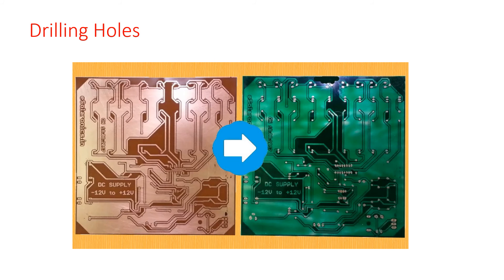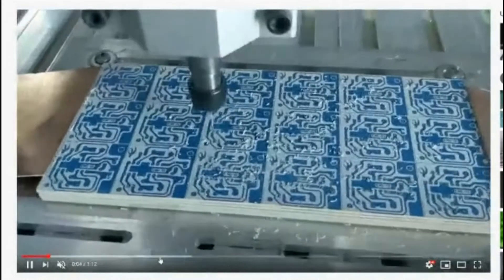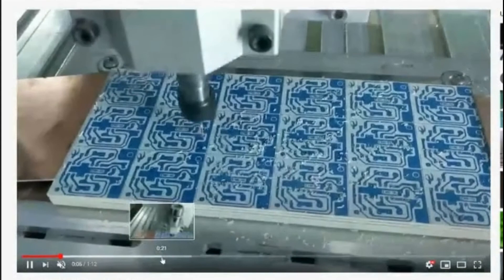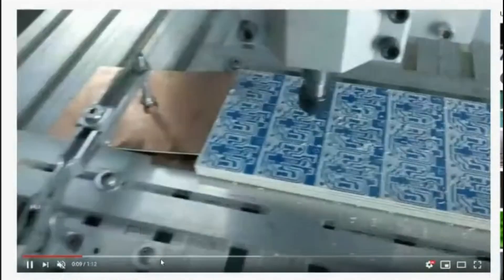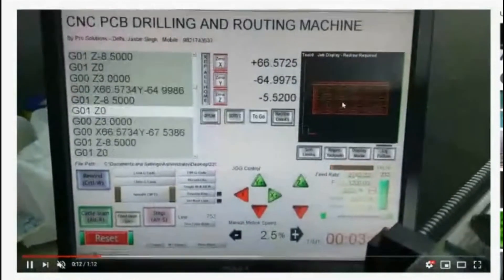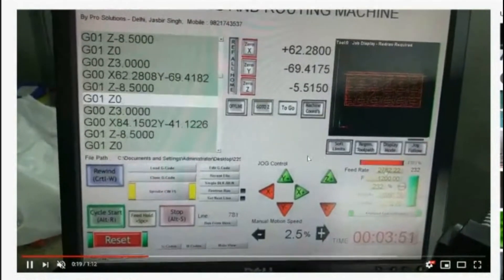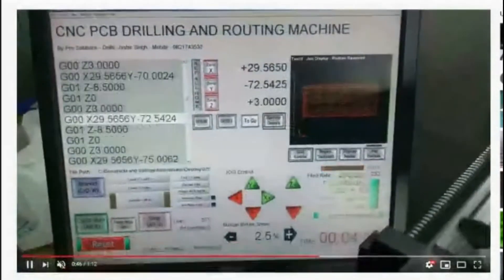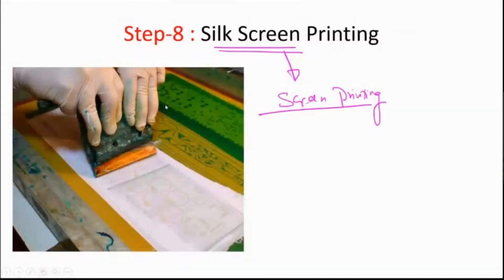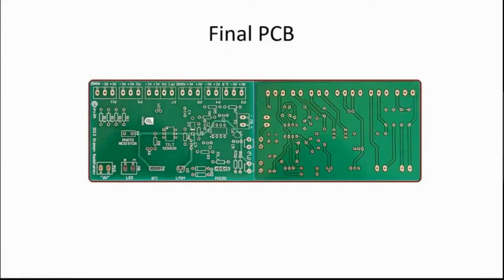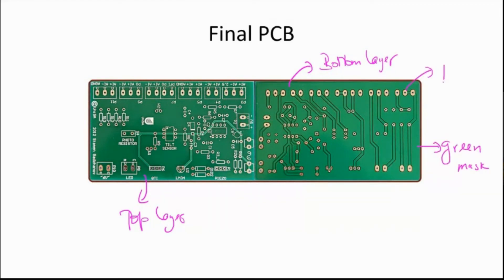The next step is drilling holes using a drilling machine or automated CNC drilling machine. The machine uses the drill file's X and Y coordinates to automatically go to each pad location and drill the hole. Once the drilling process is over, the PCB is complete — with a green mask on the bottom and silk screen on the top.